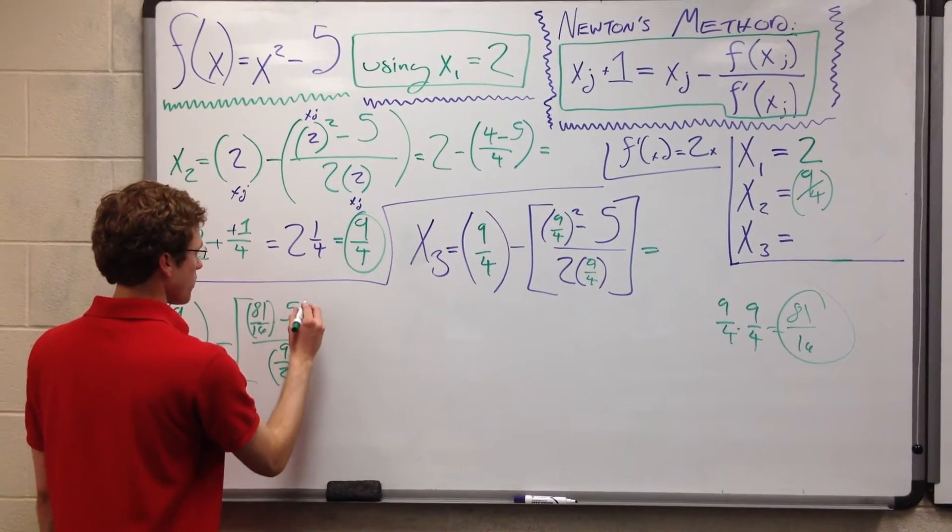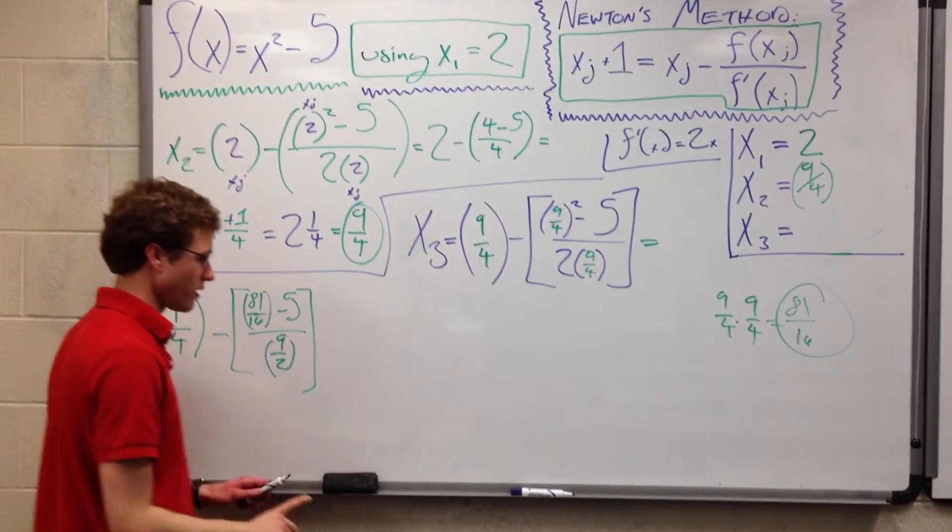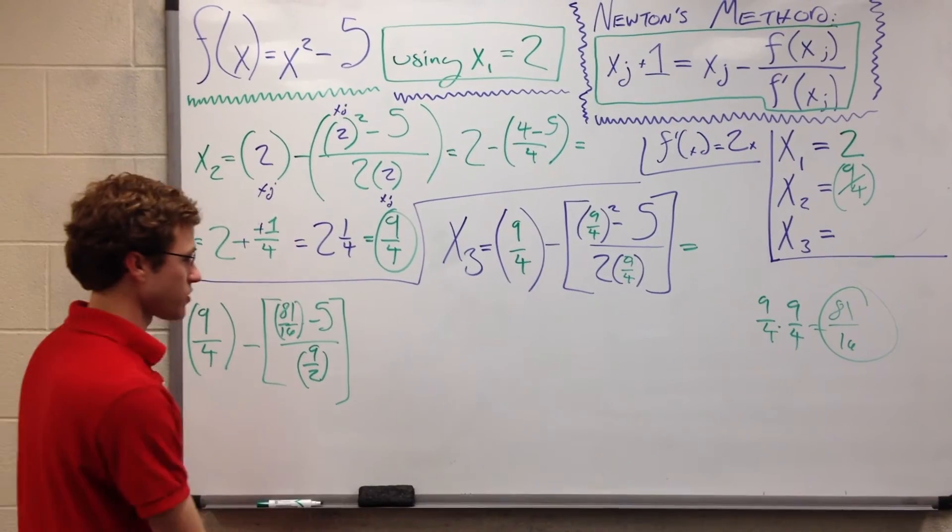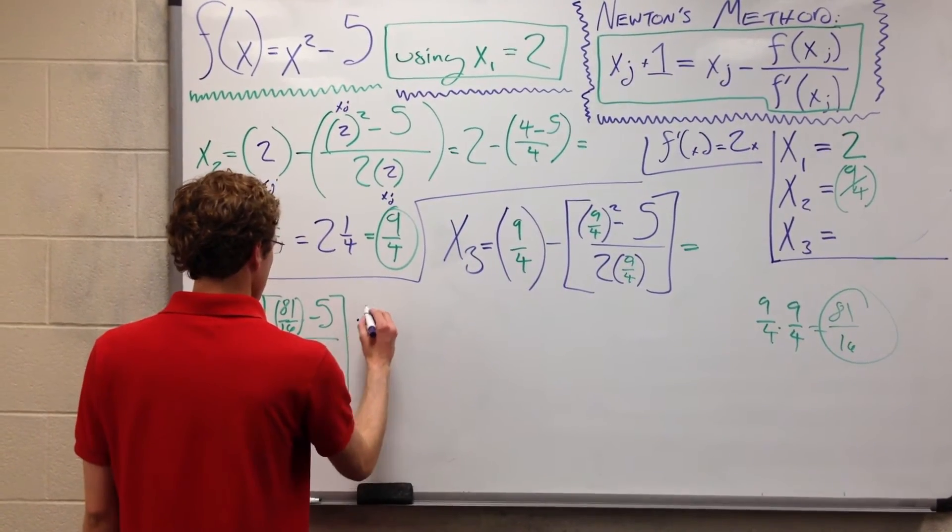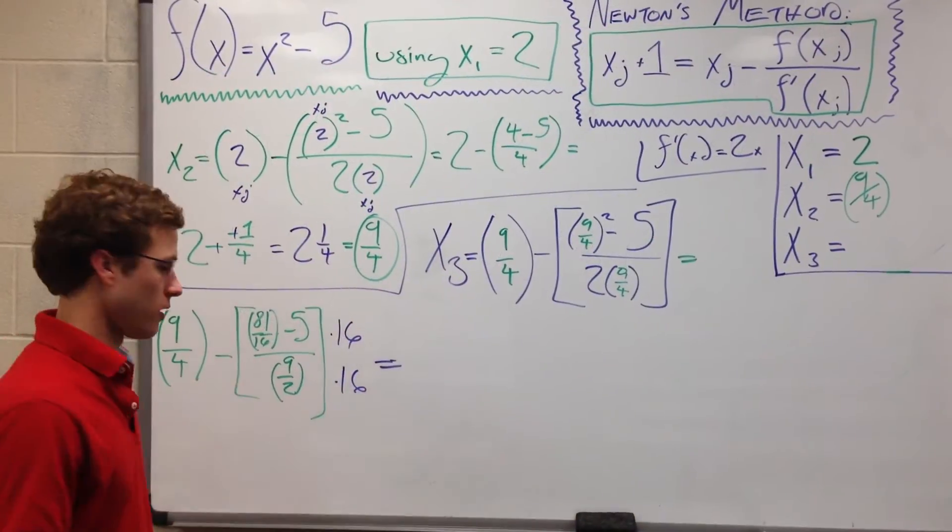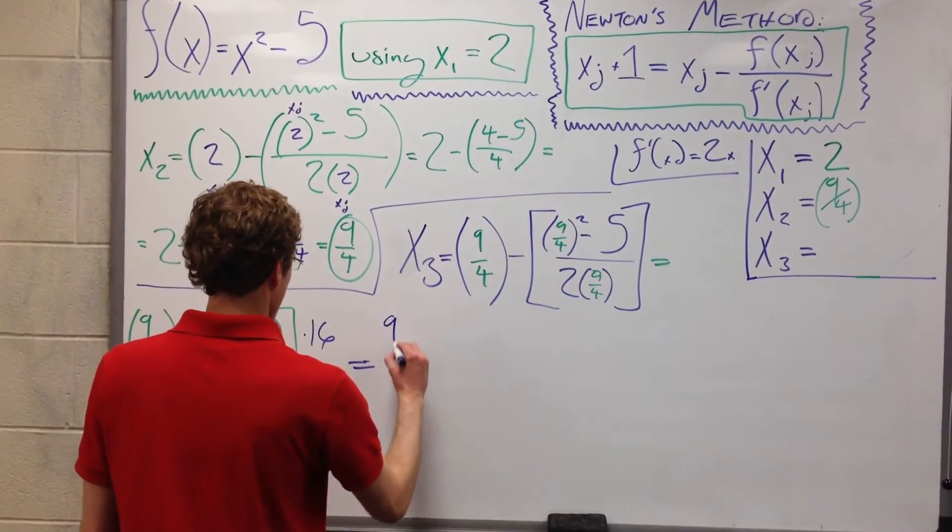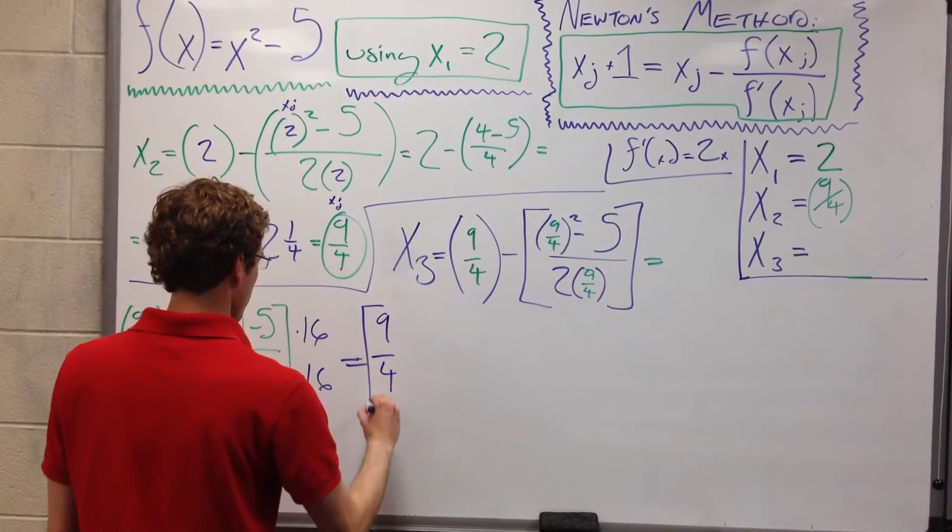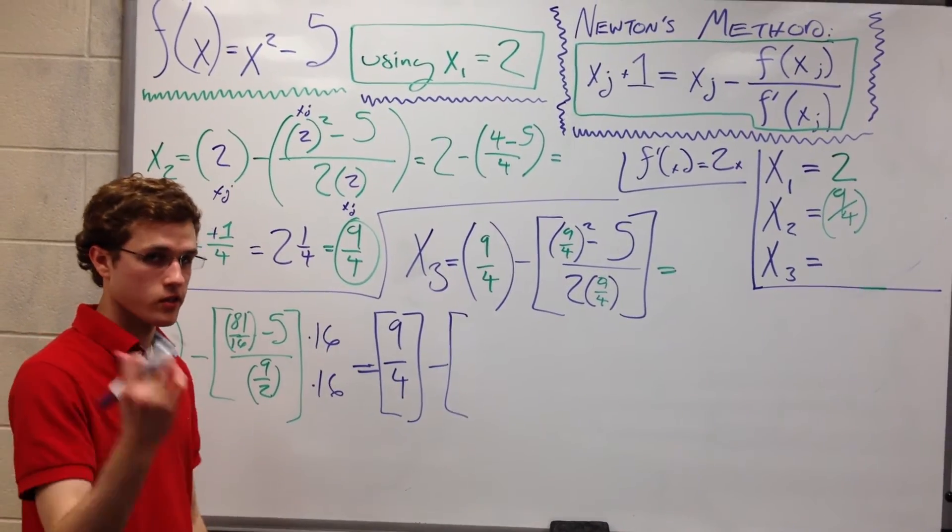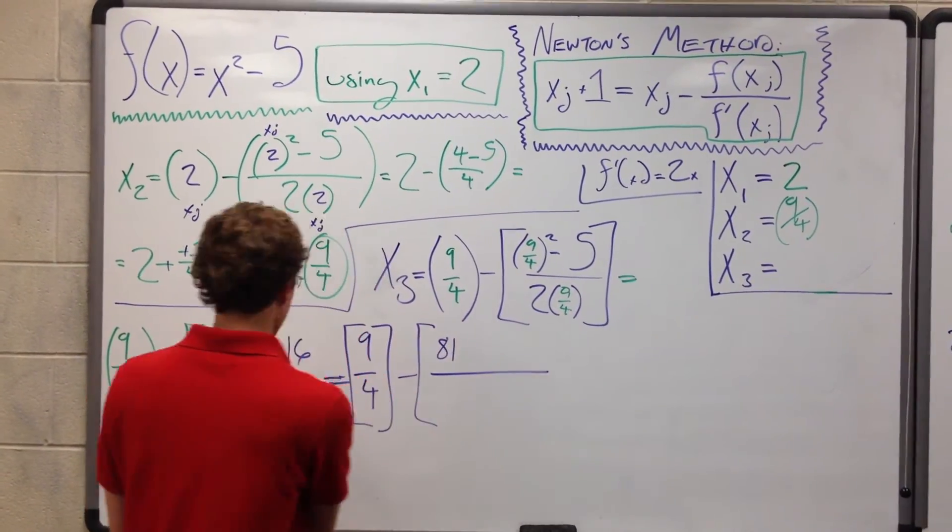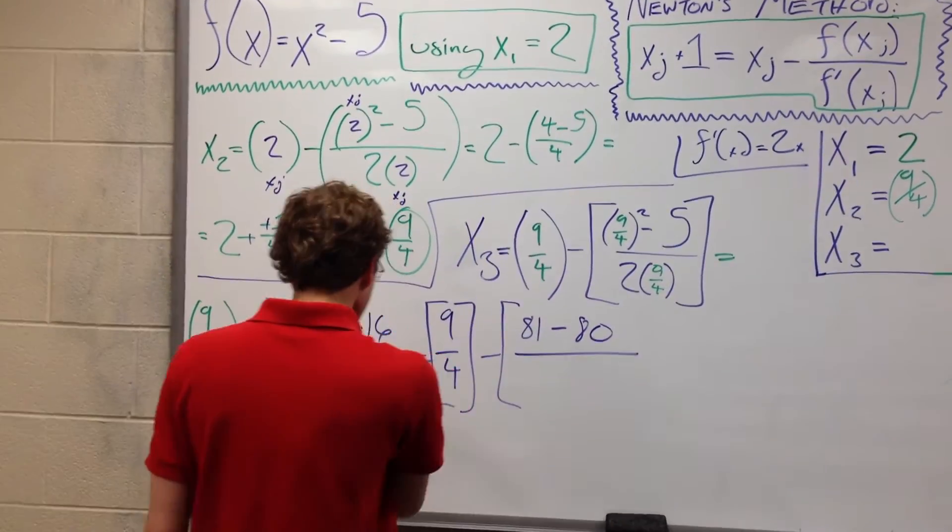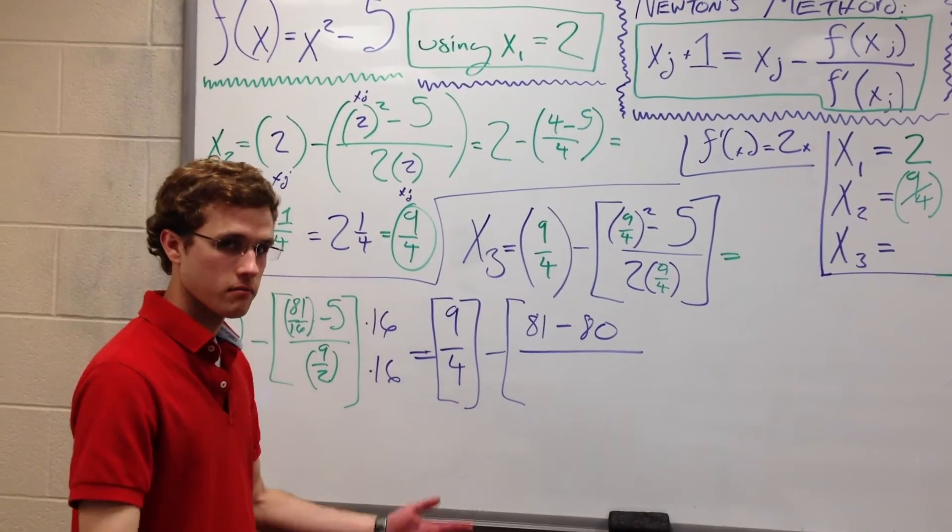This is looking a bit cleaner but still kind of ugly. The next step, let's get rid of this 16. Let's multiply everything times 16. Top times 16, bottom times 16. This is going to let us arrive at: still 9/4, we can't get rid of that, minus 16 × 81/16 just kills the denominator, giving us 81. 5 × 16 = 80, so minus 80. And then 9/2 × 16 is just 72.